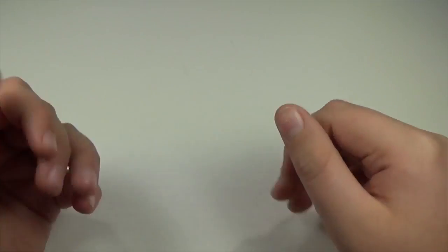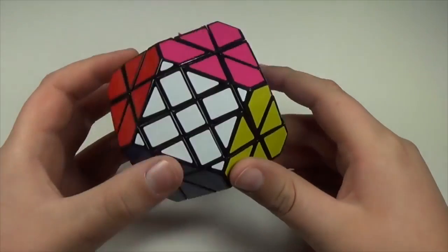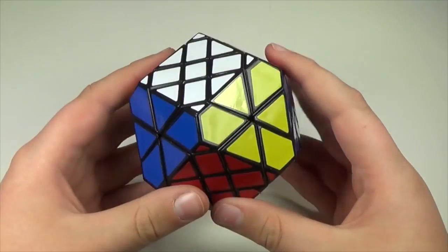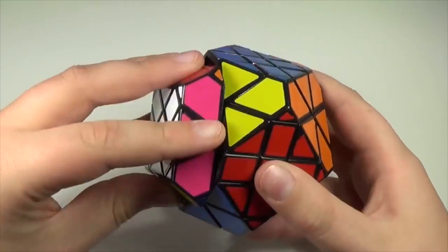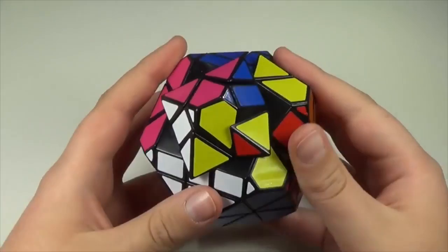Okay, so let's get started. These are not going to be in any really particular order. First up, we have the Diane Gem 3. This is a really cool puzzle. It turns on the face and on these sort of edges. It also jumbles, as you can see here.